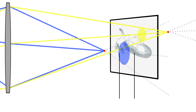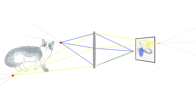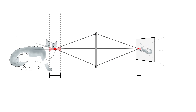The further away these light rays converge from the sensor, the larger blurry areas of light, or bokeh, will be produced. If these circles of confusion are small enough to be perceived by a human as a single point, they are within the depth of field, or area of acceptable focus. So technically speaking, depth of field is determined by what the human eye can see.